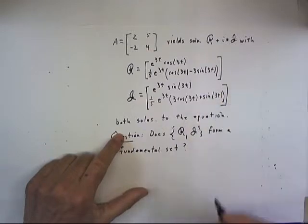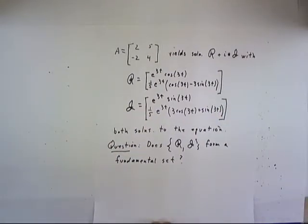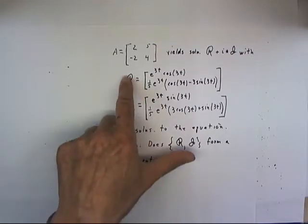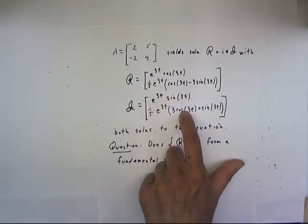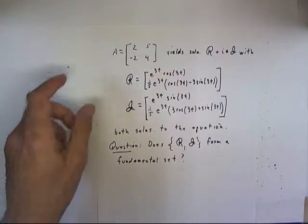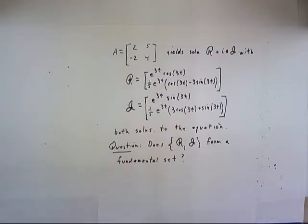And I seem to be in the habit of not closing my parentheses. These are both solutions to the original equation. So if I plug either of these solutions into my equation y prime equals A y, I'm going to get an identity verifying that each of these is a solution.